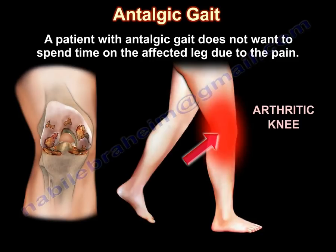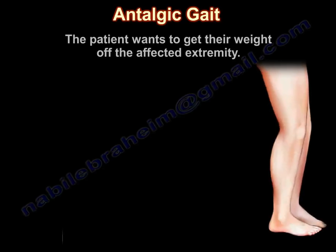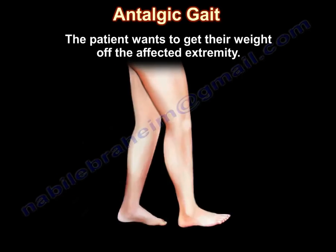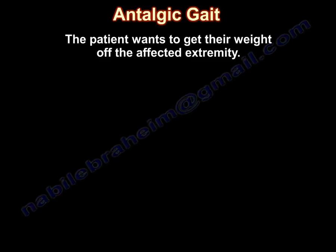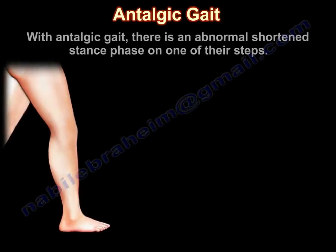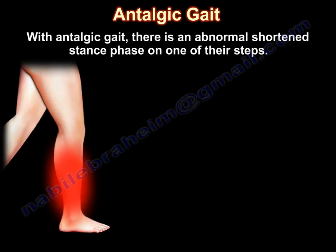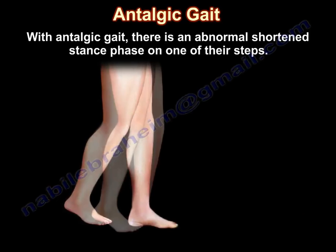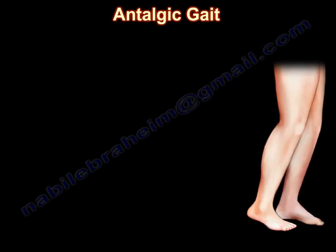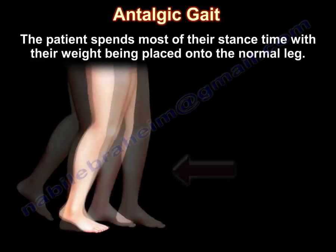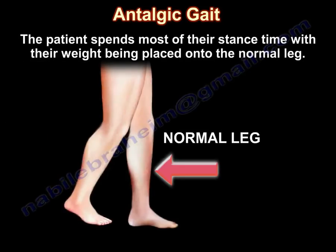For example, if the patient has an arthritic knee or arthritic hip, the patient wants to get their weight off the affected extremity. With antalgic gait, there is an abnormal shortened stance phase on one of their steps.